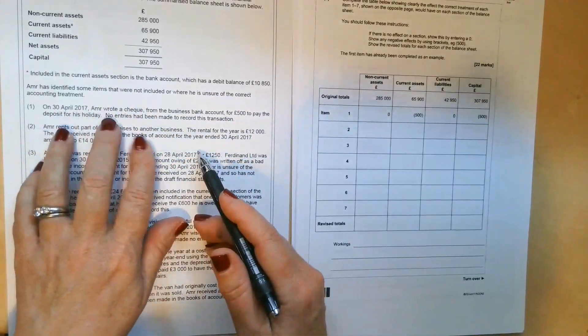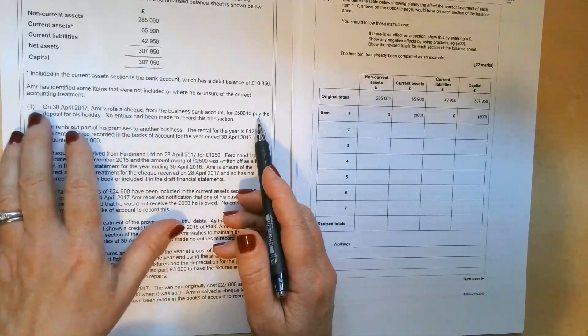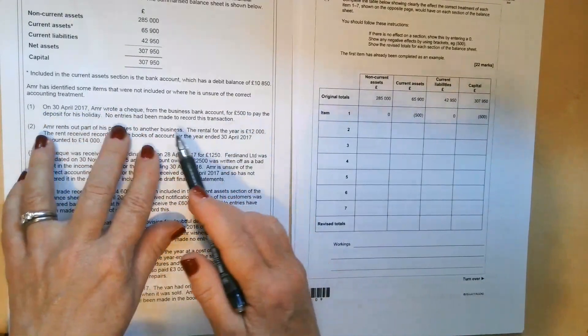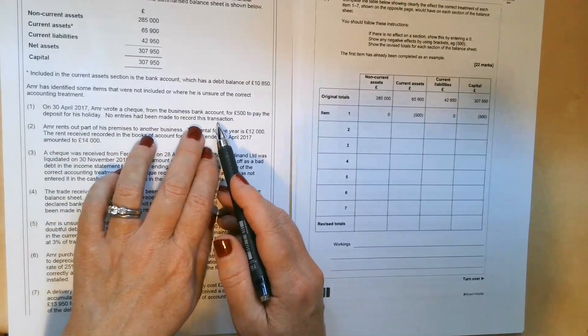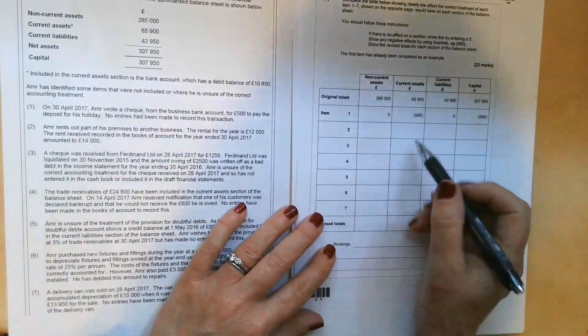So on the 30th of April, Amir wrote a check from the business bank account for £500 to pay the deposit for his holiday. No entries have been made to record this transaction. So he's written a check, it has to come out of the bank account.